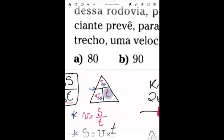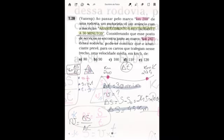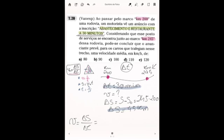E ele está querendo saber quem é que é a velocidade. Eu tenho aqui a fórmula da velocidade é espaço sobre o tempo. Delta S eu encontrei que é igual a 45 quilômetros. E delta T eu encontrei que é igual a 30 minutos.